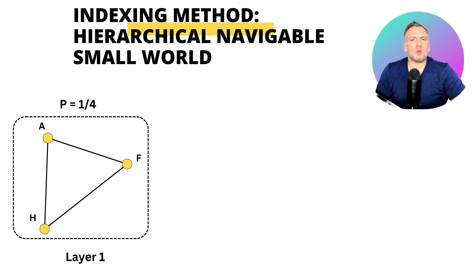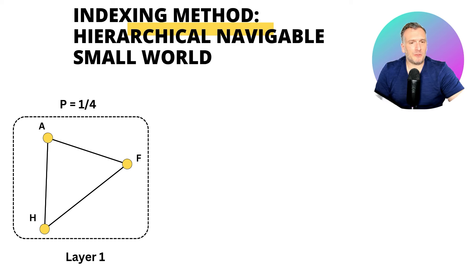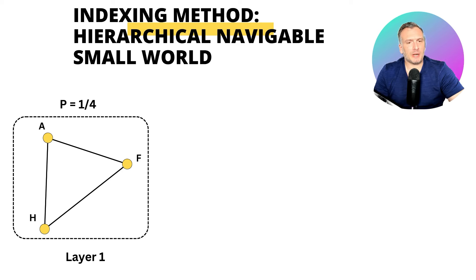The problem with Navigable Small World is that it is a bit slow. This is what Hierarchical Navigable Small World (HNSW) is trying to solve. The idea is that we have different levels of graph. At the first level, we fill the graph exactly the same way as Navigable Small World, but each vector is inputted with a probability smaller than 1. This has a tendency to create long connections.